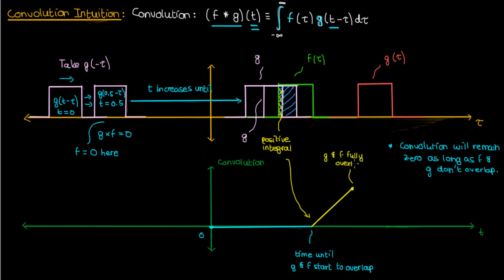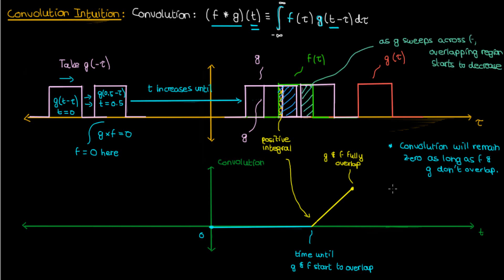At the point when g and f completely overlap each other, the convolution integral will peak. Then as g continues to sweep towards the right, at larger t the overlap between f and g decreases, and the value of the convolution integral therefore drops. This continues until f and g no longer overlap and the convolution goes back down to 0.